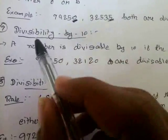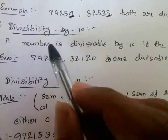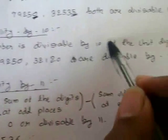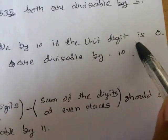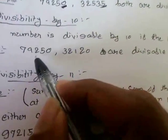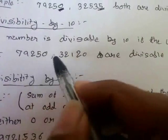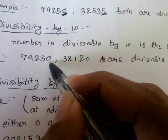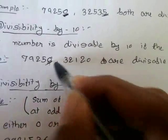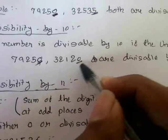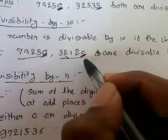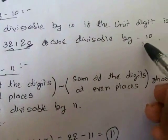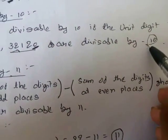The seventh rule says a number is divisible by 10 if its unit digit is 0. For example, in these two numbers the unit's place is 0, so we can say both numbers are divisible by 10.